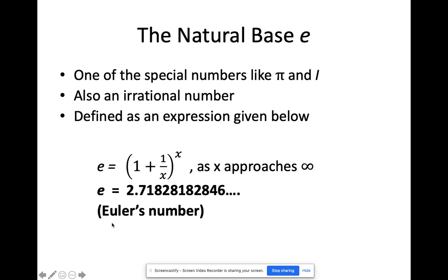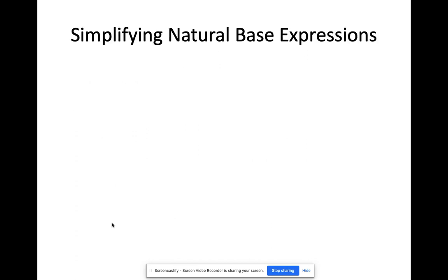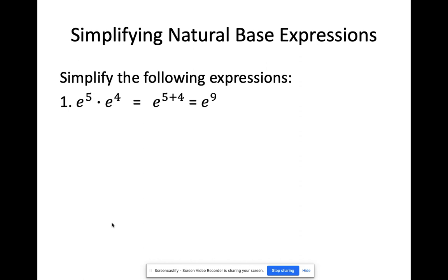Now this is otherwise known as Euler's number. Some people pronounce that Euler's, but I think it's Euler's. Now, since it's also a base, this means that you can use laws of exponents in simplifying natural base expressions. So like say, for example, e^5 times e^4, just simply add them. So e^(5+4), that gives you e^9.